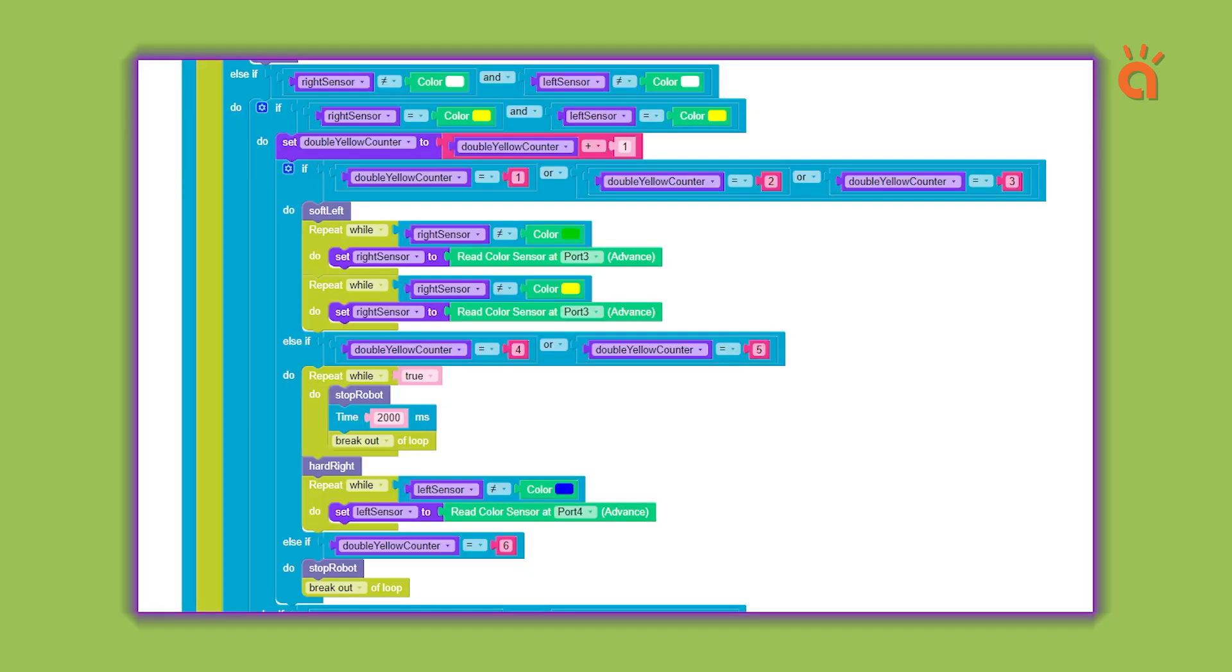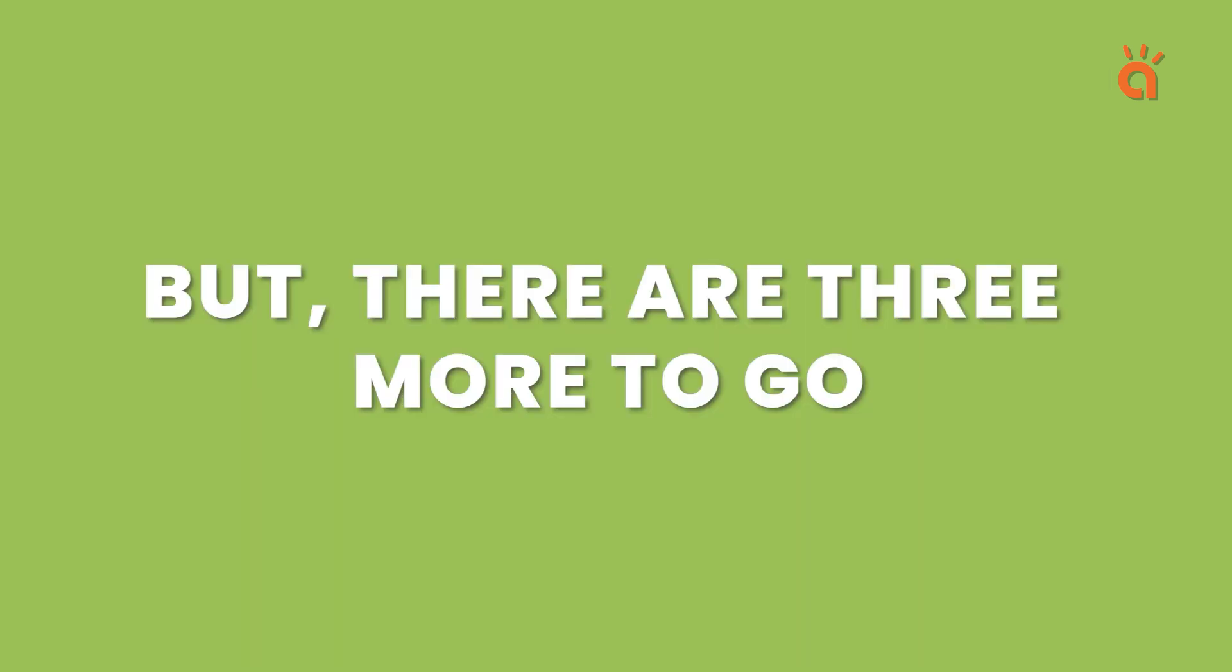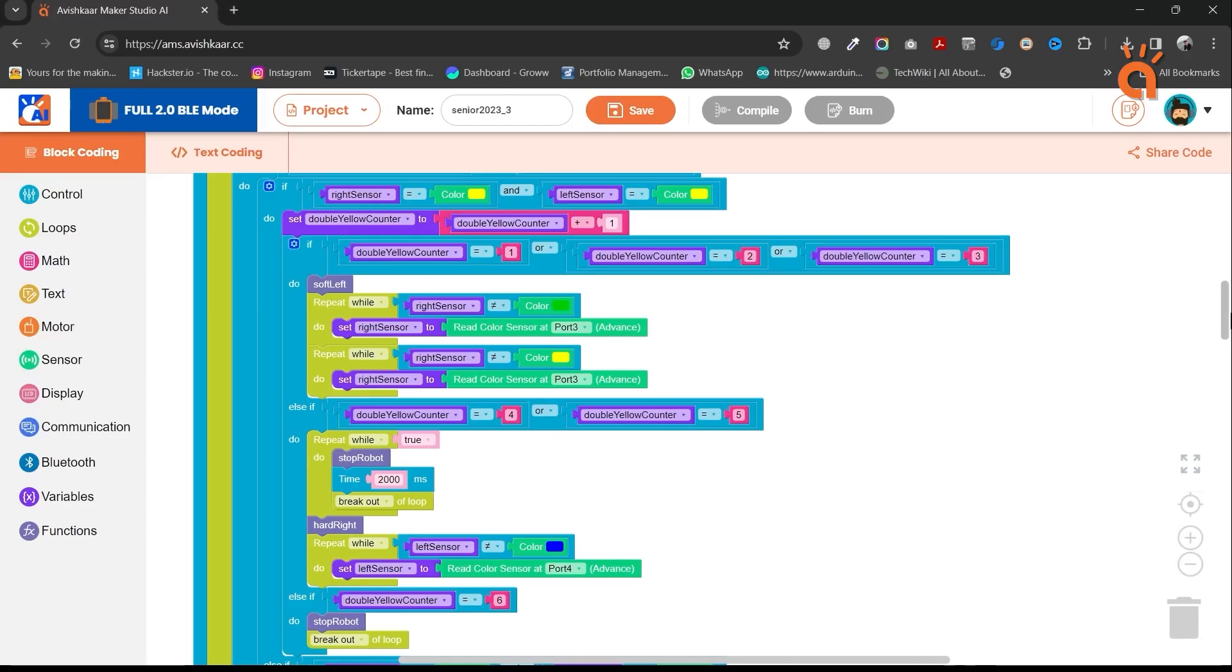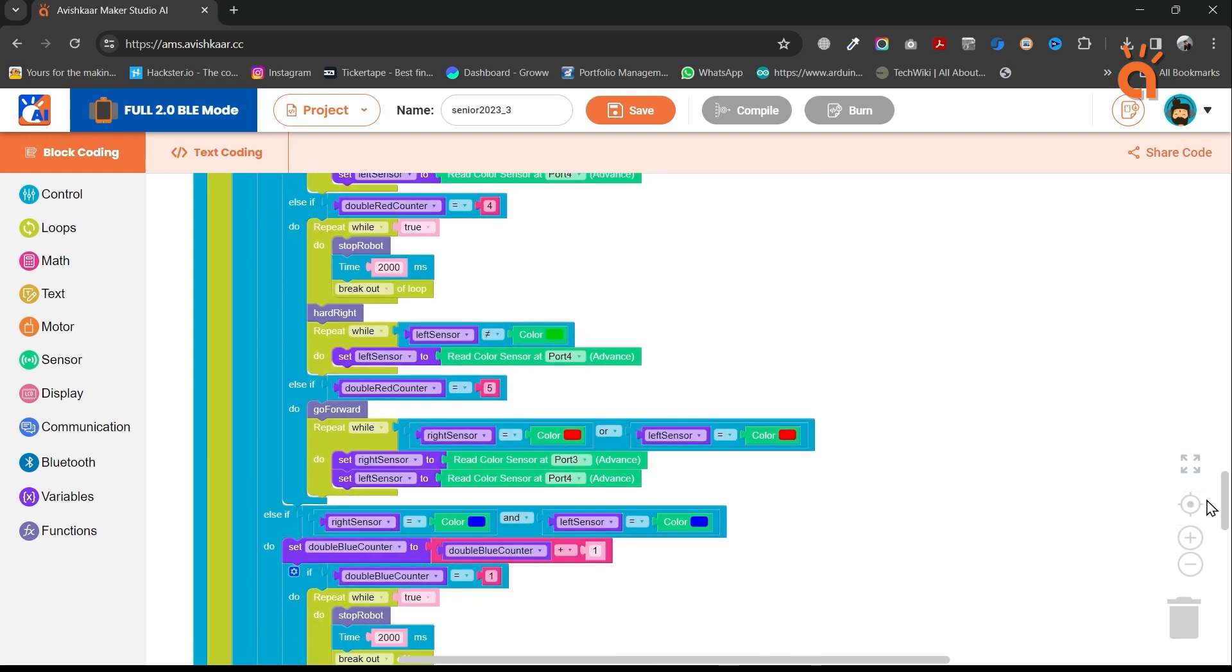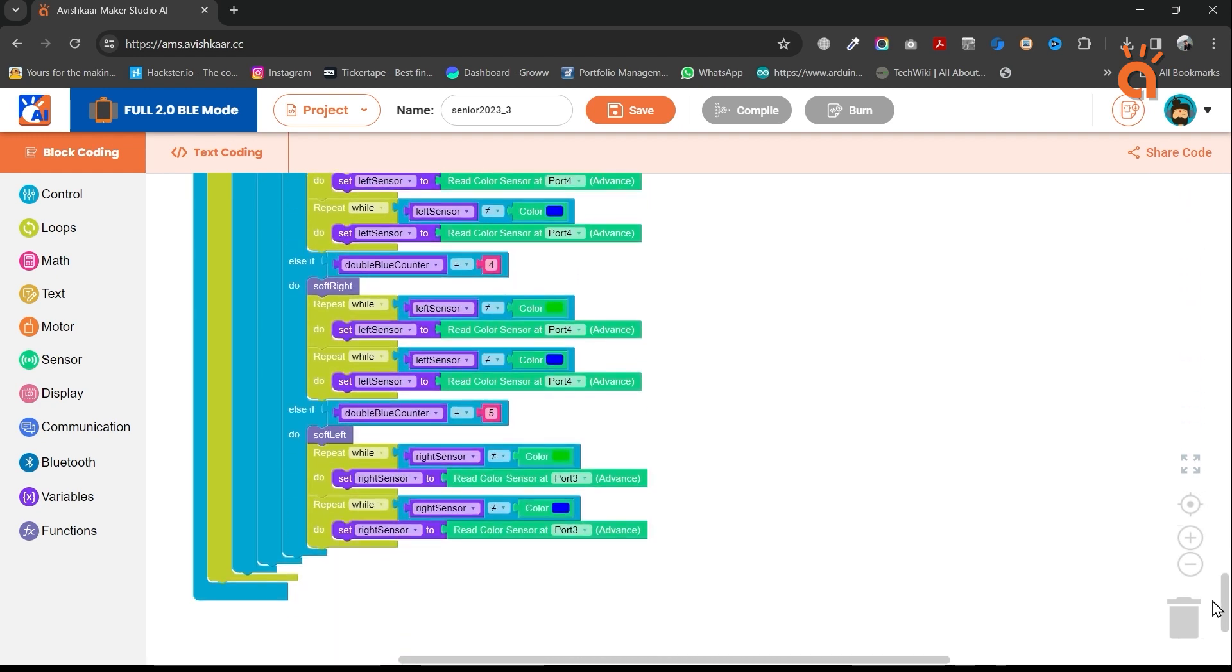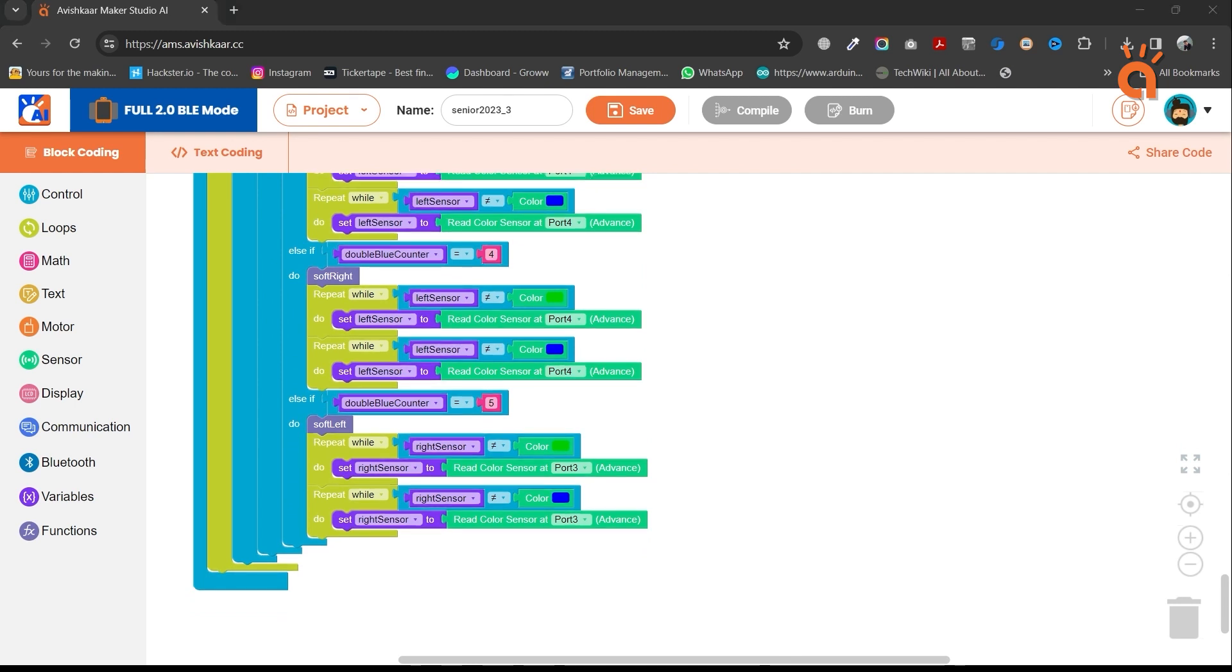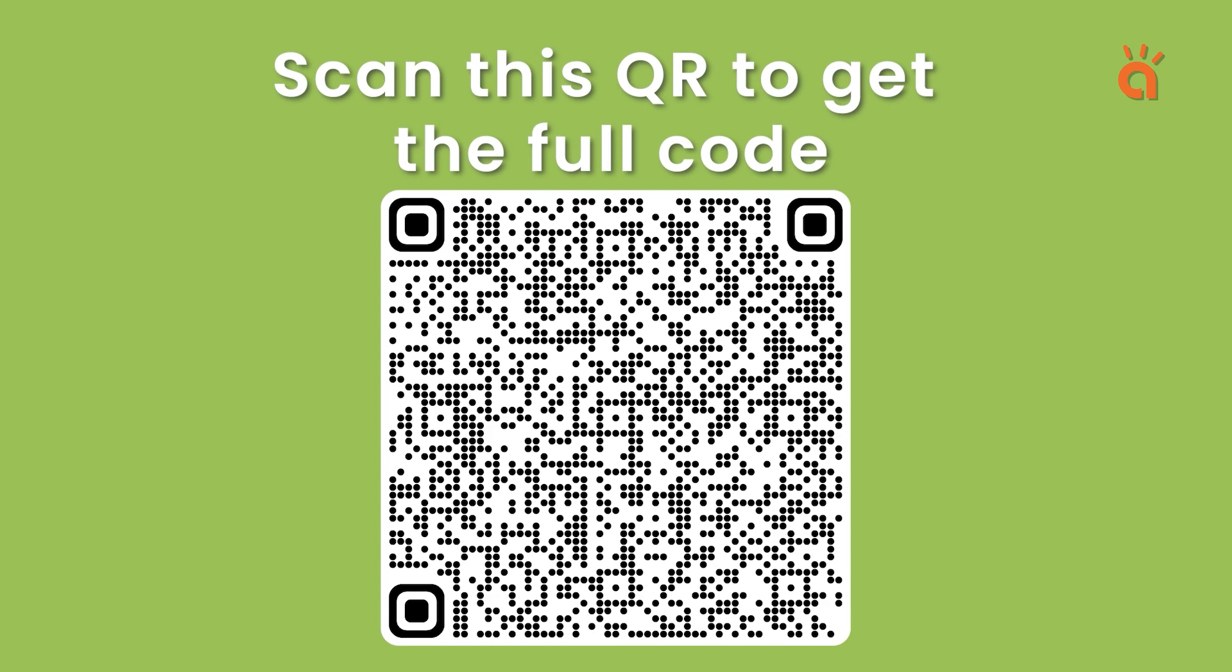So far, we have completed the programming of one single color, but there are three more to go. So we will use the same process and repeat it for other colors. Now that we have added the code for each color, the programming of our senior Autobot is complete. Test this code on your robot and practice hard. We will meet in the next video.